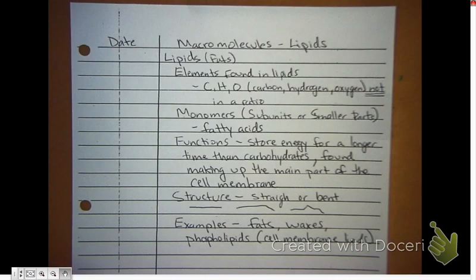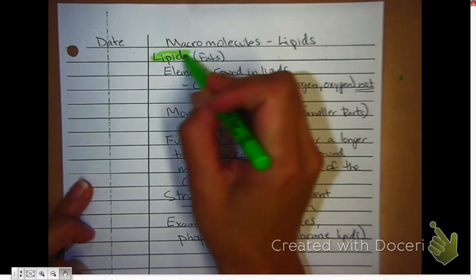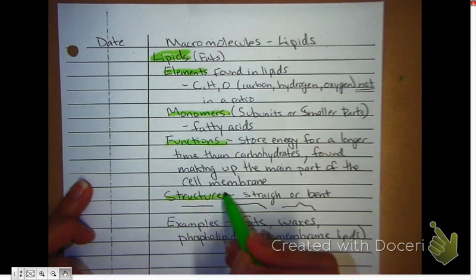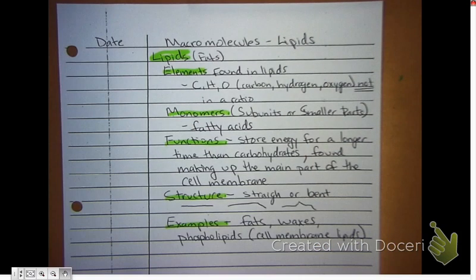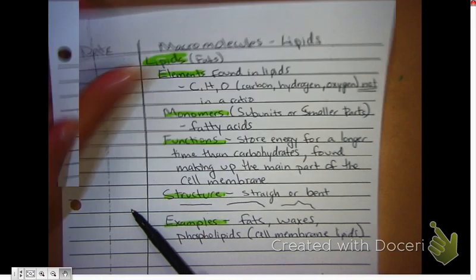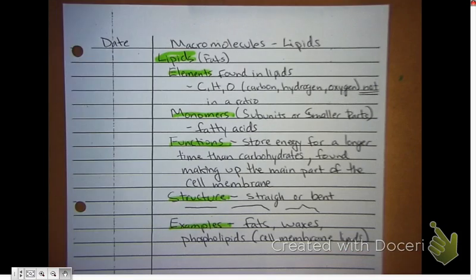Grab your highlighter. Highlight lipids, elements, monomers, functions, structure, and examples. And make sure that you write a question on the side and you write a summary on the bottom. When you're finished with that, you can move on to the next video.